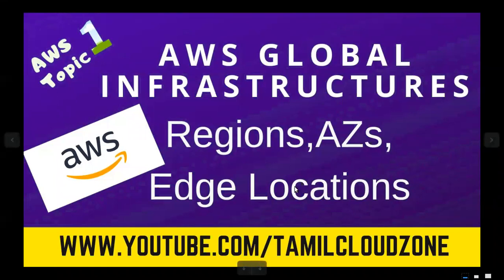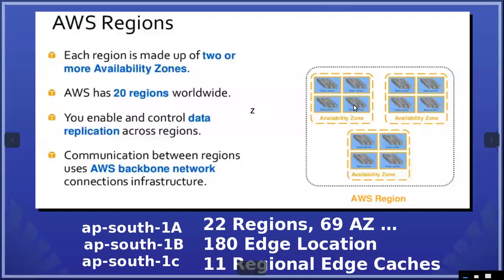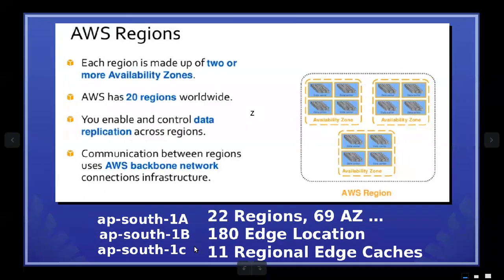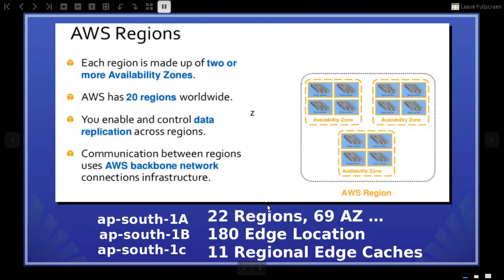Let's talk about the region. In a geographic location, an AWS data center cluster is called a region. Worldwide, there are 22 regions. In India, there is one region in Mumbai.